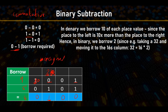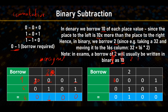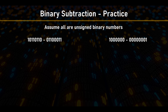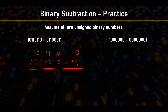In binary, we borrow two from the left position since each position is two times bigger than the position to its right — borrowing one from the left gives two in the current position, just as borrowing in base 10 gives ten. In the exam, they sometimes write the borrowed value as '10' in binary. Let's practice with more examples, assuming unsigned binary numbers — making sure to keep columns lined up.